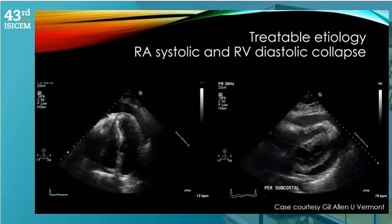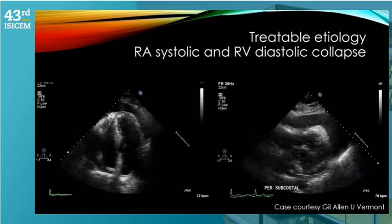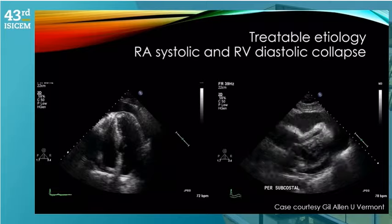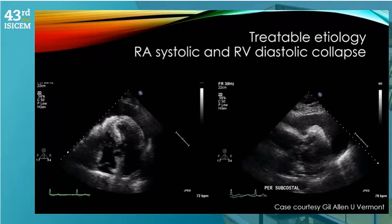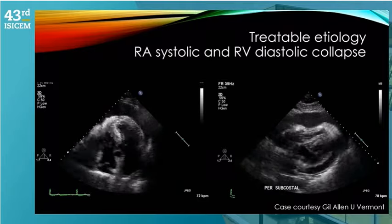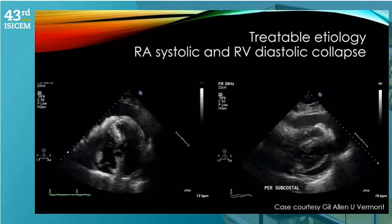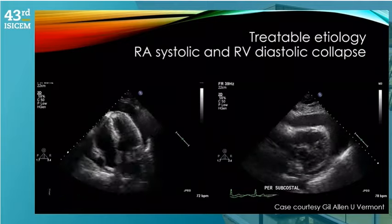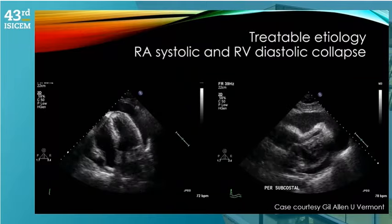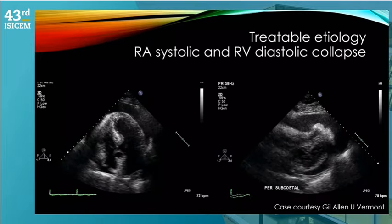Other treatable etiologies include tamponade — these are cases where you can code until the cows come home, but until you relieve the cause of cardiac arrest you don't have a fair chance of helping the patient. On the left you can see an apical four-chamber view with right atrium collapse during systole. On the right, the subcostal view shows a heart struggling to maintain any end-diastolic volume, with RV diastolic collapse. This patient had about 800 ml of pericardial effusion that was emergently drained, stabilizing hemodynamics before surgery to find the underlying cause.